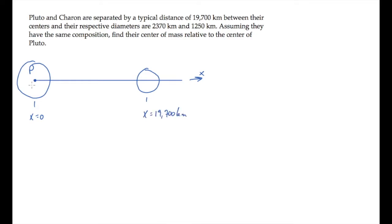This figure shows the locations of Pluto with a P and Charon with a C along with their radii, locating Pluto at the origin where x equals zero. The radius of each object is half the diameter. Those values are shown here.